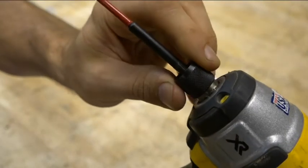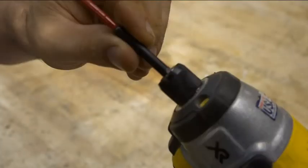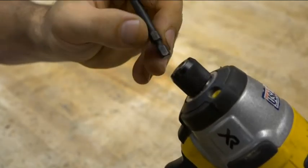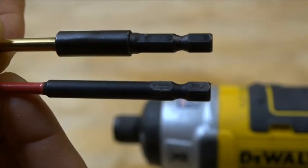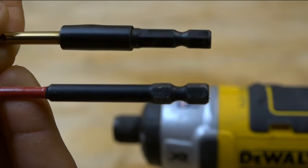To remove the bit pull away from the body of the drill on the chuck and then slip the bit out. Bits must have the locking notch to not fall out during use.